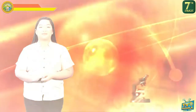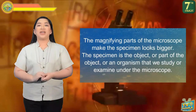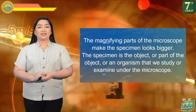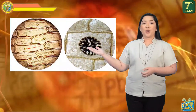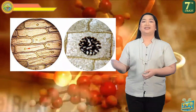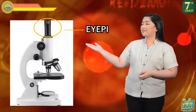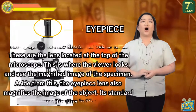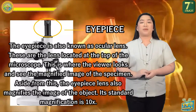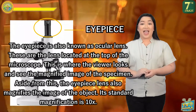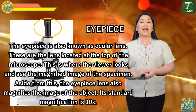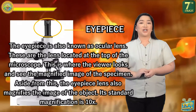The magnifying parts of the microscope make the specimen look bigger. The specimen is the object, part of an object, or organism that we study or examine under the microscope. The first magnifying part is the eyepiece, also known as the ocular lens — the lens located at the top of the microscope. This is where the viewer looks to see the magnified image, and it also magnifies the image. Its standard magnification is 10 times.